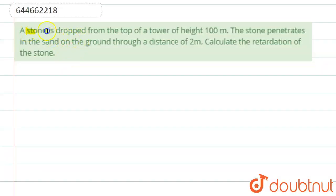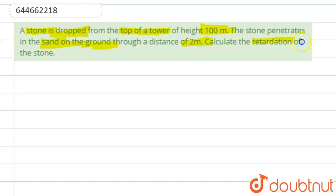The question says that a stone is dropped from the top of a tower of height 100 meters. The stone penetrates into the sand on the ground through a distance of 2 meters. Calculate the retardation of the stone. So if we see the motion of the stone, we will see that from the top of the tower to the bottom.